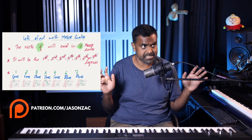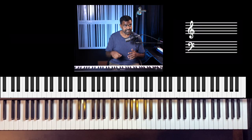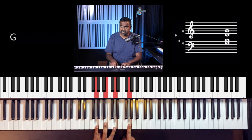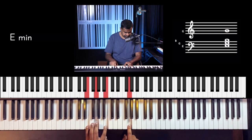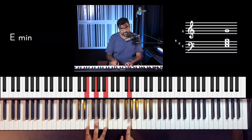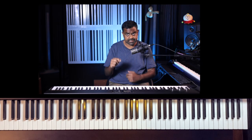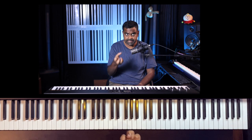In the G major scale, there are three chords which have the note G in them. In fact, in all major scales, there will always be three triads — major, minor, or diminished — containing G. In G major: the G major chord has a G, E minor also has a G, and C major also has a G.